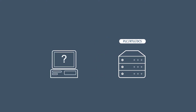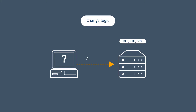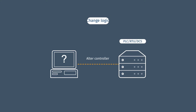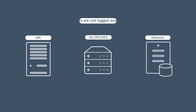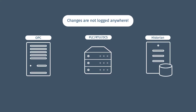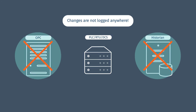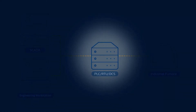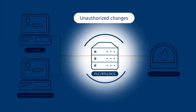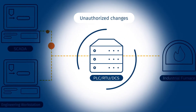In fact, anyone who has network access can easily change the logic of these controllers. To make matters worse, when changes are made they are not logged anywhere — not in the historian, not on the OPC server, and not on the controllers themselves. Protecting the controllers against unauthorized changes is key for ensuring operational safety.